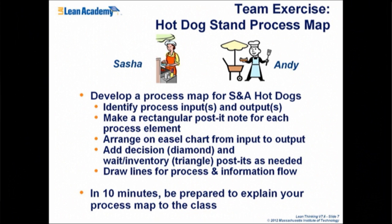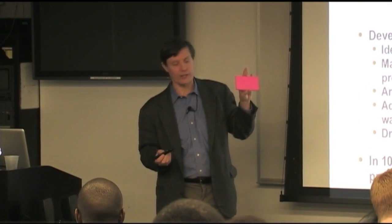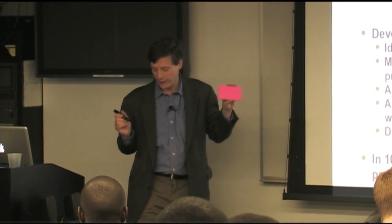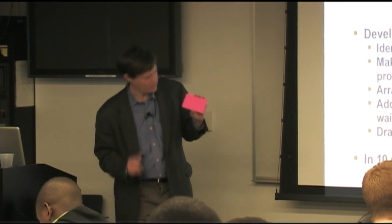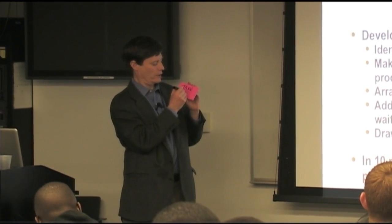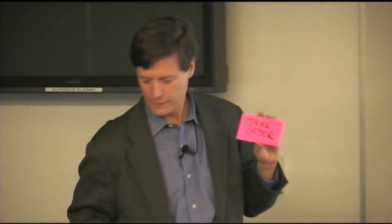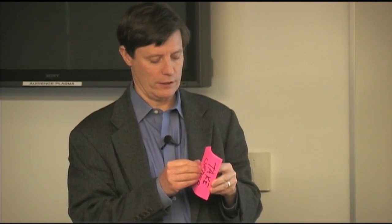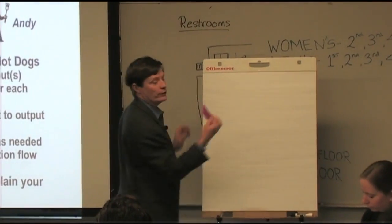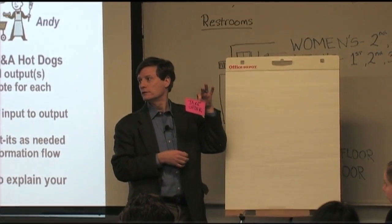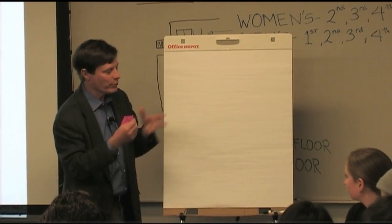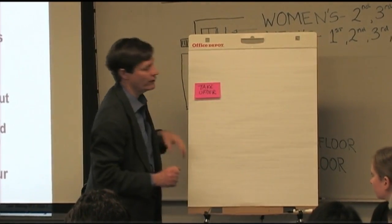Think about the steps, their inputs and outputs, and then we're going to create a map using the Post-it notes on the table. With the Sharpies, for each process element, make a Post-it. The first one is 'take order' — so let's make it easy: 'Take Order.' Who takes the order? Sasha takes the order. We could add that information or use color — perhaps this color implies Sasha. We're using stickies so we can move them around, because a priori we're not sure how these things should be arranged to make the most sense.